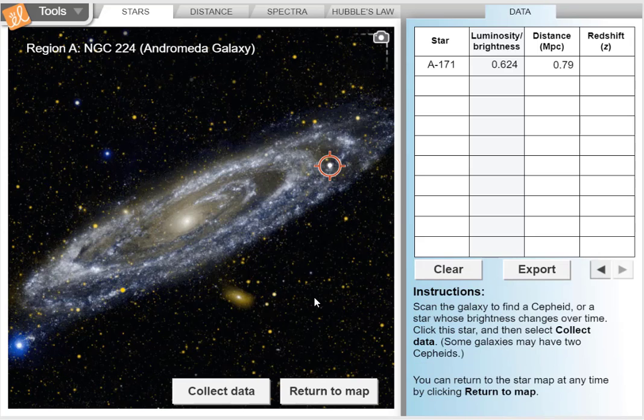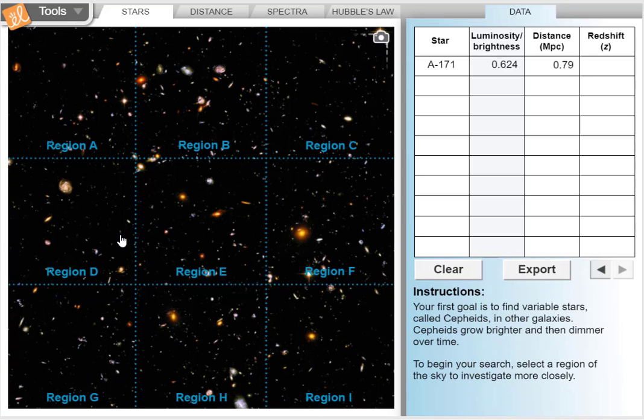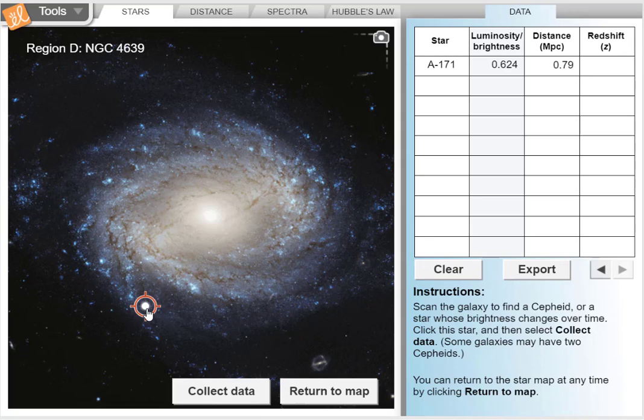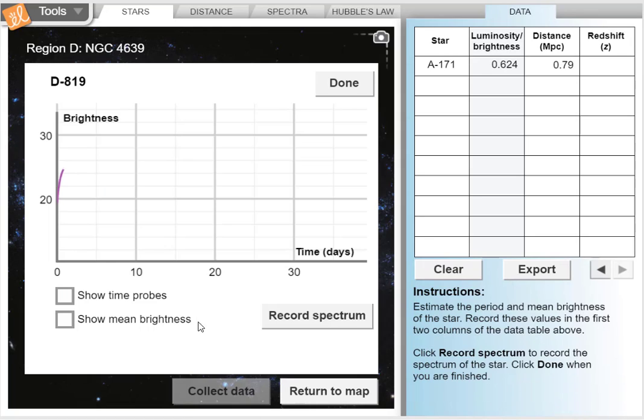So let's do one more star. And I'll just do it real quickly to remind you of the steps. And this time I'll be in region D. And I'm going to click this star to collect data, which is star D819. And you'll see that it's moving through that. But it's taking the star a lot longer to move through one cycle of this wave.